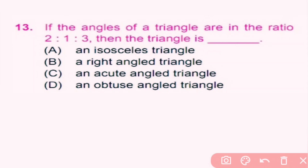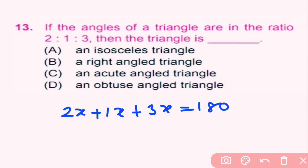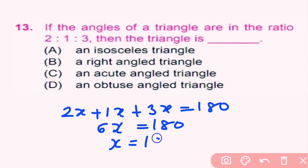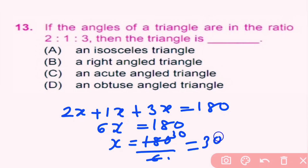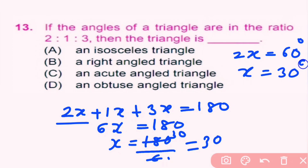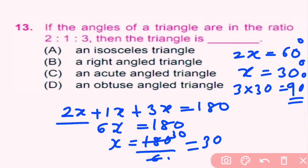Question 13. If the angles of a triangle are in the ratio 2:1:3, then what type is the triangle? Let the angles be 2x, 1x, and 3x. Their sum: 2x plus x plus 3x equals 6x equals 180, so x equals 30. Therefore the angles are 60 degrees, 30 degrees, and 90 degrees. Since one angle is 90 degrees, the triangle is a right-angle triangle. B is correct.